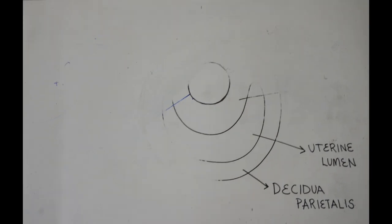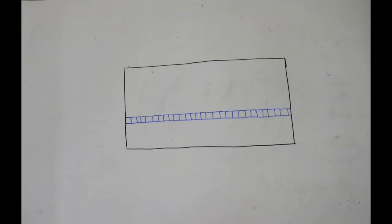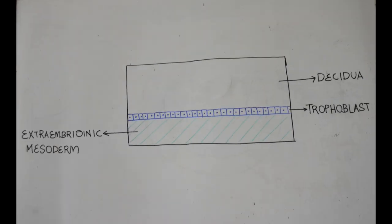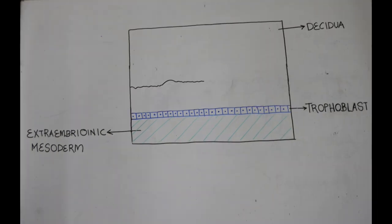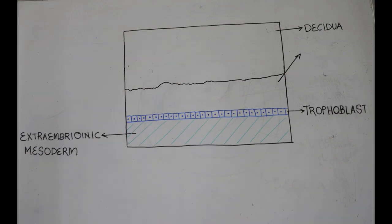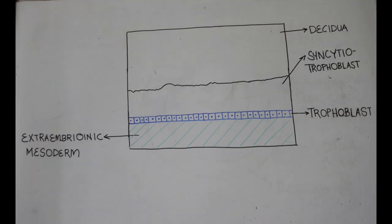The trophoblast is at first made of a single layer of cells. As the cells multiply, two distinct layers are formed. The cells that are nearest to the decidua lose their cell boundaries, thus one continuous sheet of cytoplasm containing many nuclei is formed. Such a tissue is called syncytium. Hence this layer of trophoblast is called syncytiotrophoblast.